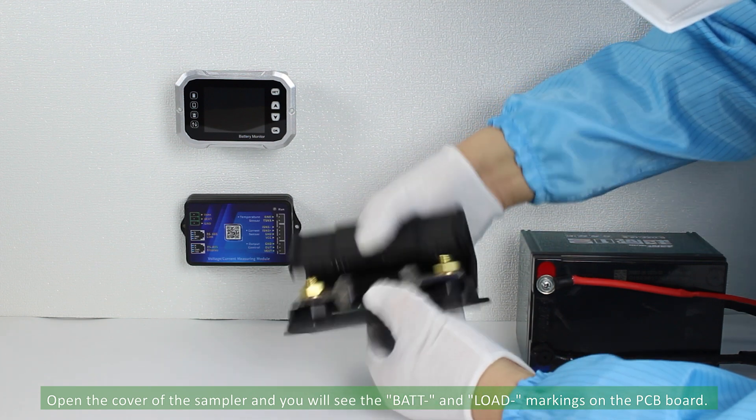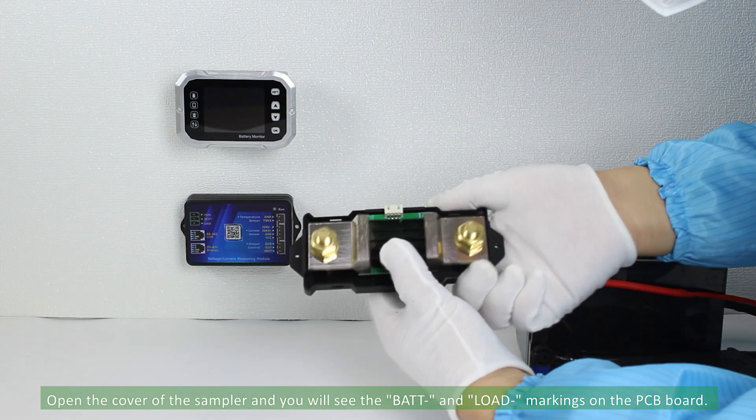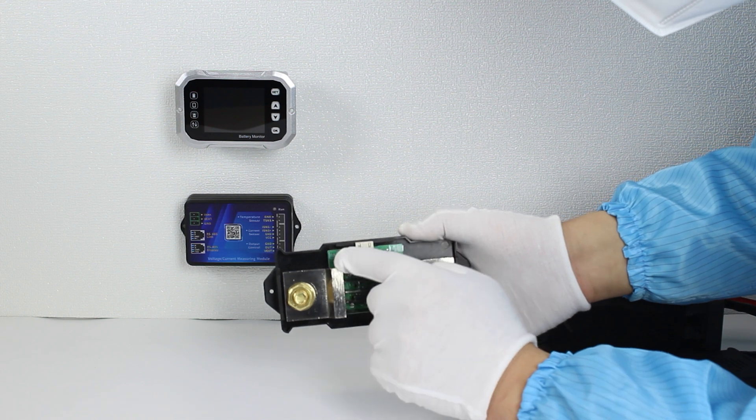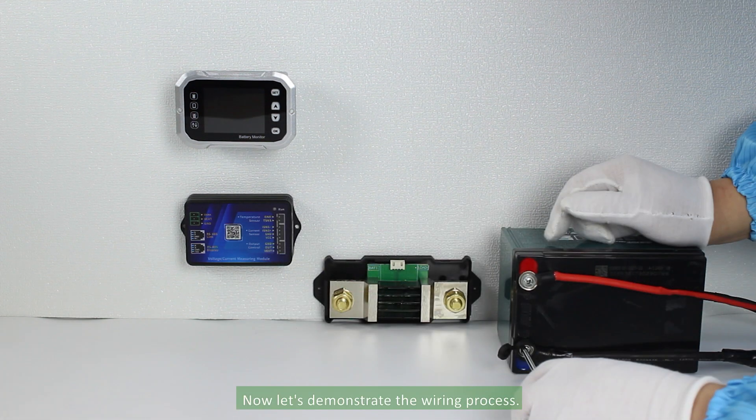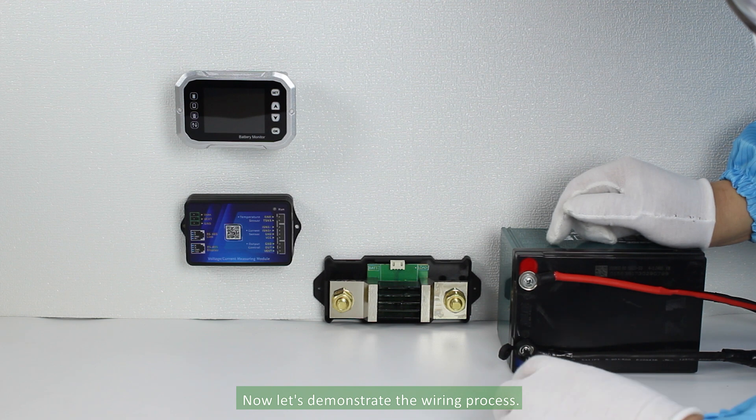Open the cover of the sampler and you will see the bat and load markings on the PCB board. Now, let's demonstrate the wiring process.